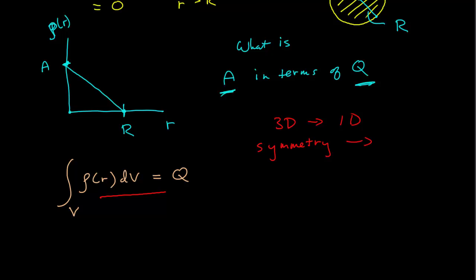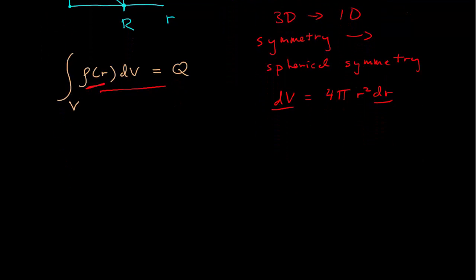If you have spherical symmetry, and that means that what we're integrating is only a function of r, then the volume element dV is equal to 4πr²dr. And you've replaced a three-dimensional integral over the volume into a one-dimensional integral over the radius.